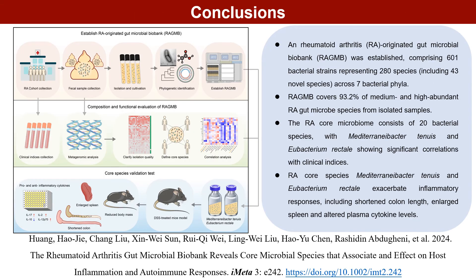In summary, this study successfully isolated and cultured rheumatoid arthritis-originated gut microbial strains through large-scale cultivation and established a gut microbial biobank, RA-GMB. We defined the core gut microbiome associated with RA and experimentally validated the impact of these core species on host inflammation and immune responses. This work provides diverse gut microbial resources for future investigations into the etiology and progression of rheumatoid arthritis, as well as potential new targets for early detection, intervention, and treatment.